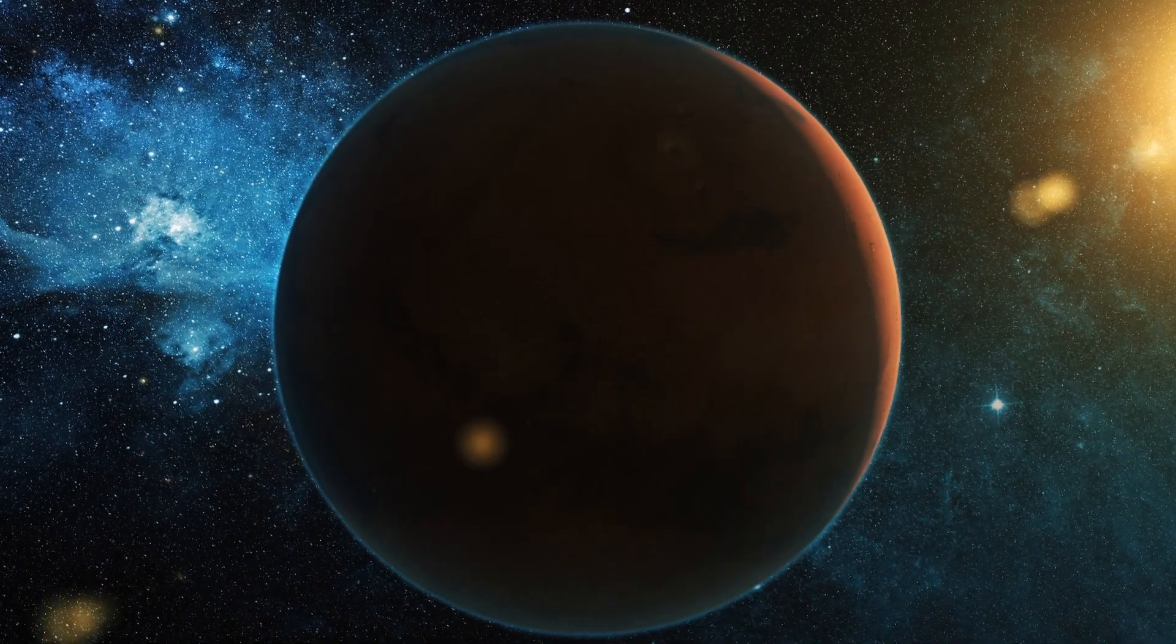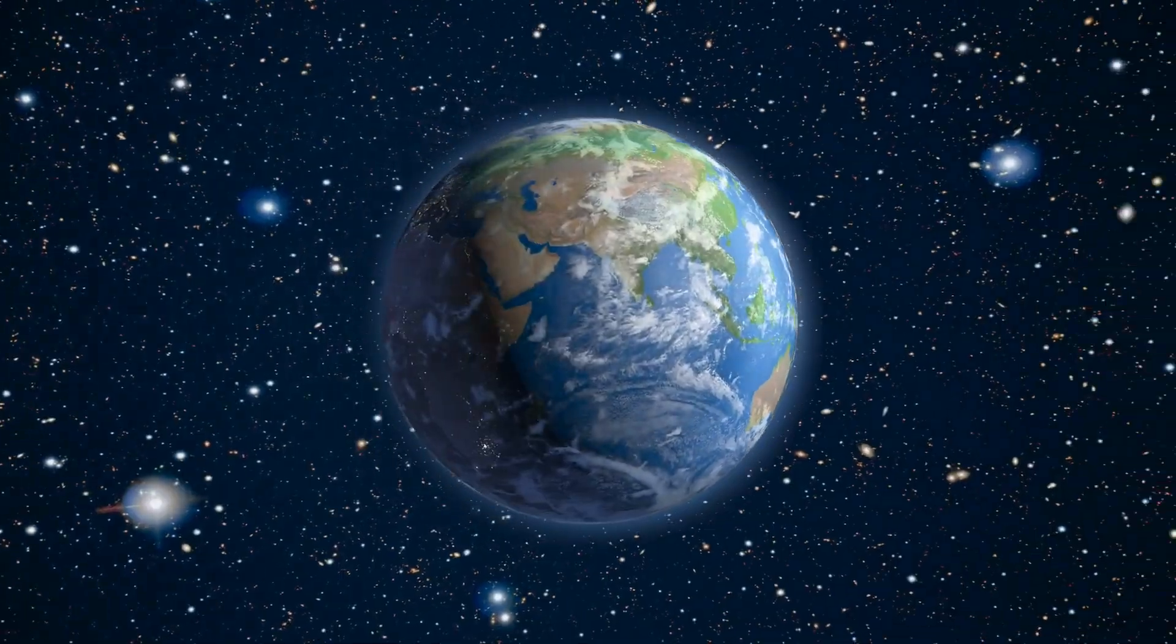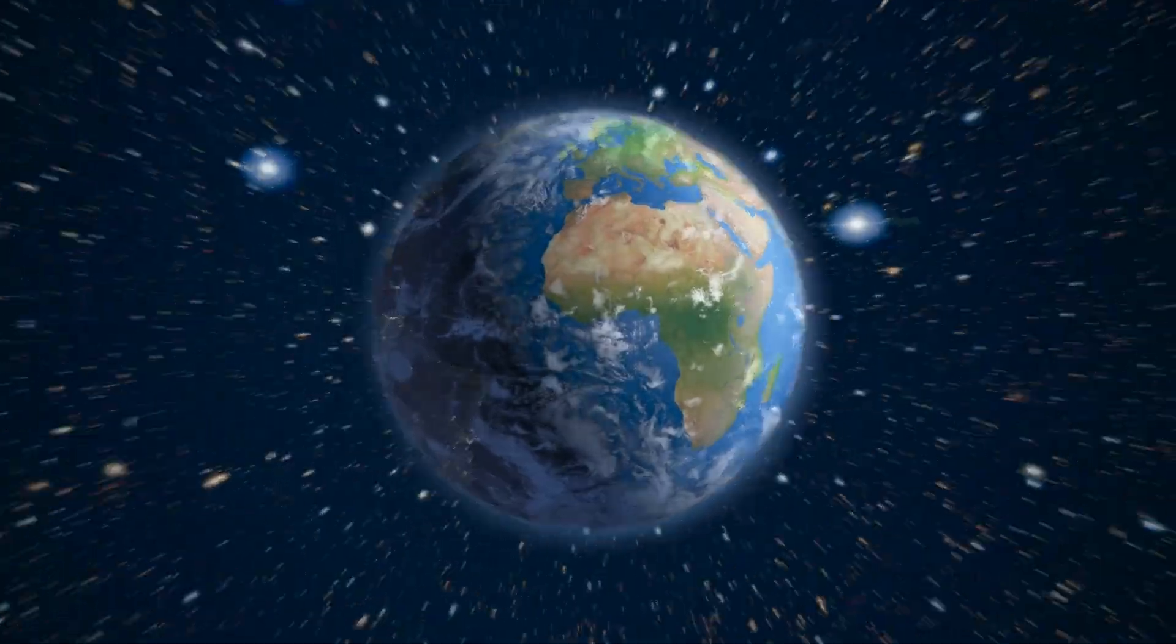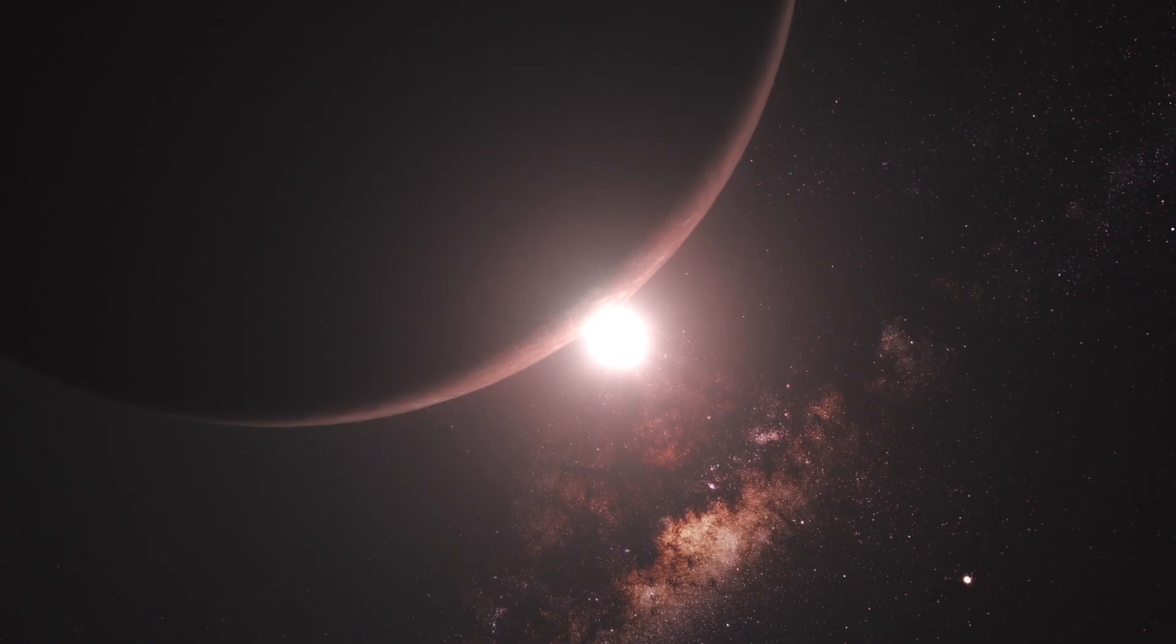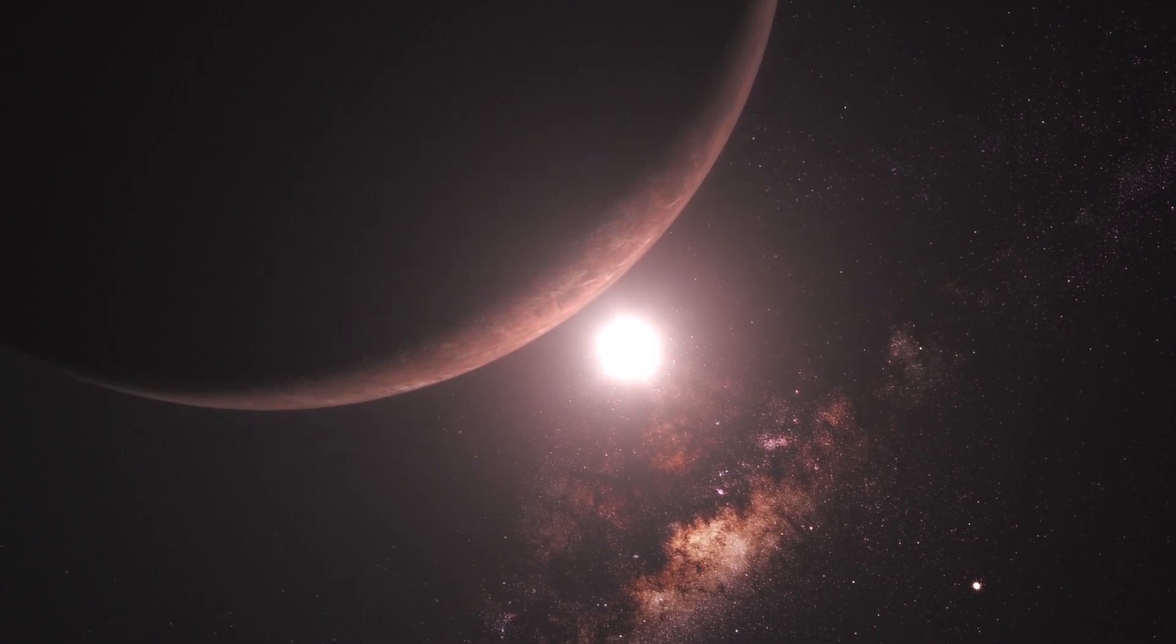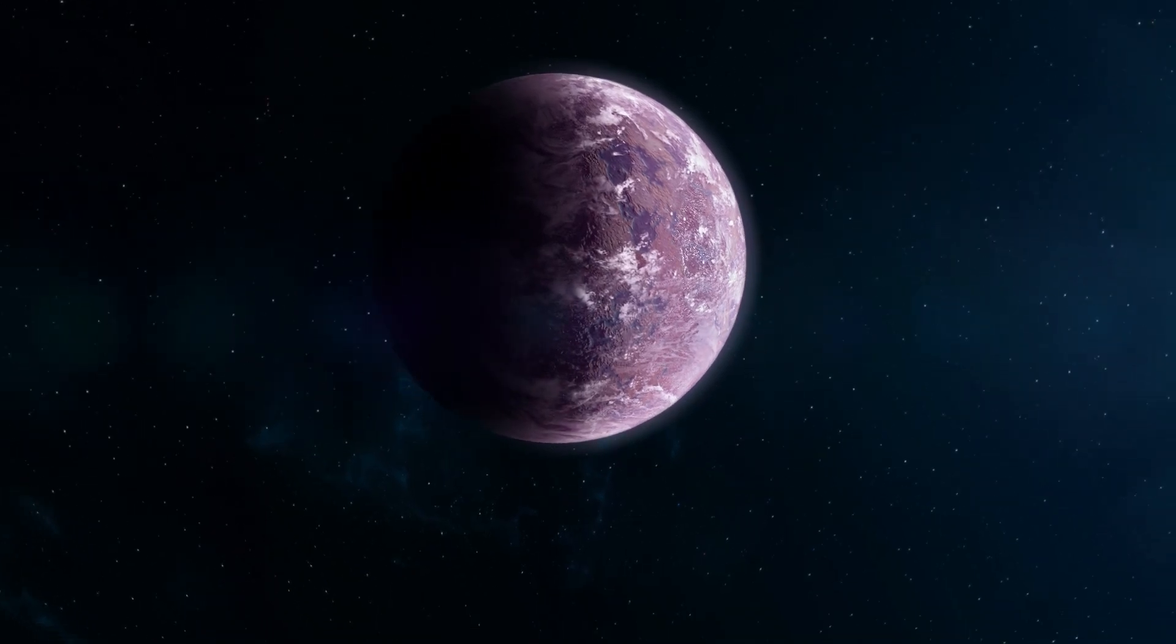While the planet enjoys a terrestrial terrain similar to the Earth, there are some ways it is significantly different from our planet as well. For one, scientists believe that the planet is tidally locked and in a synchronous rotation with its star. This means that one side of the planet is always facing the star, while the other is always facing away.